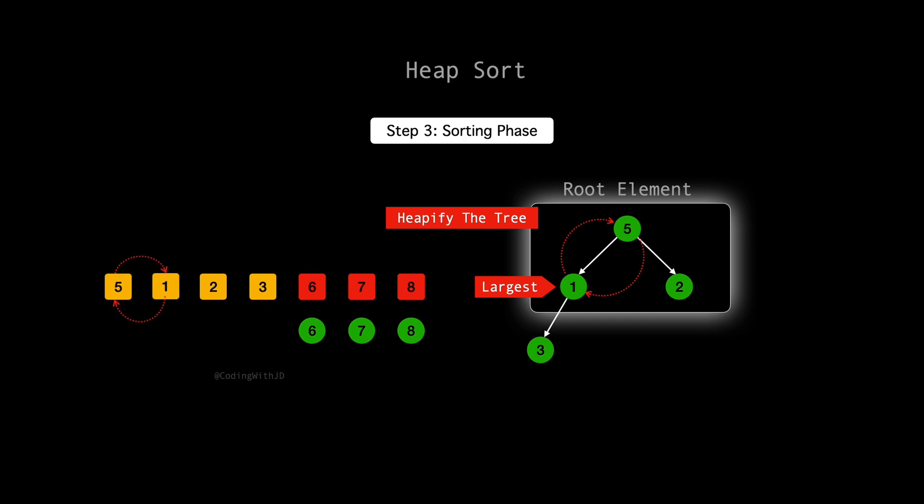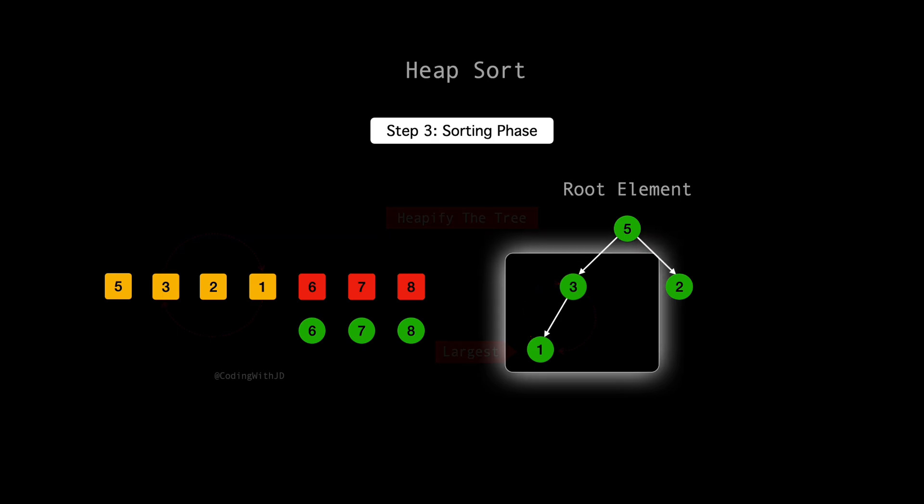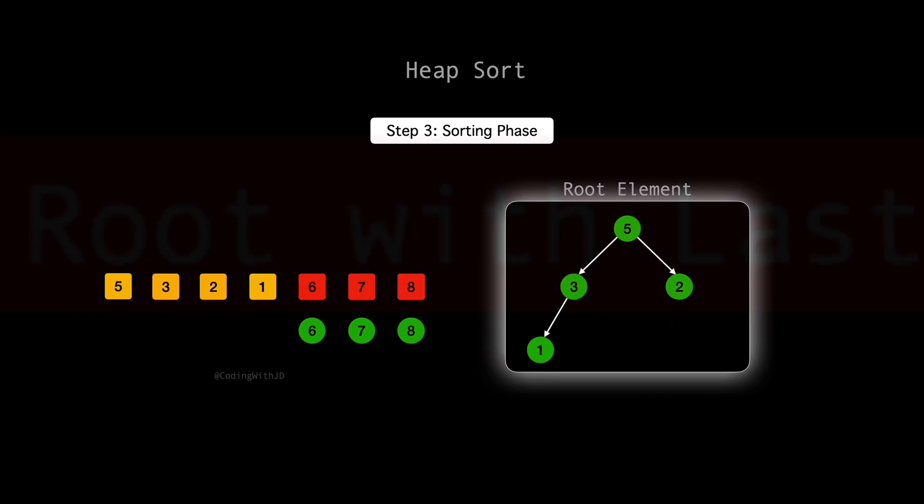After the swap, our heap configuration becomes 5, 1, 2, 3. Now 5 is correctly placed as the root. However, we need to check if the position of 1, which is now a child node, still adheres to the heap property. Looking at 1 and its new child 3, we see that 1 is still lighter than 3. To keep the max heap structure intact, a further swap is necessary between 1 and 3. This results in a new heap configuration of 5, 3, 2, 1. With this arrangement, every parent is heavier than its children, confirming the max heap condition is maintained throughout.